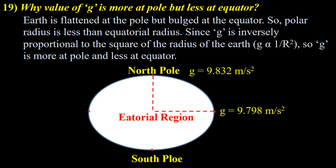We can understand with the help of a diagram. At the pole, the radius of the Earth is less, but in the equatorial region, radius of the Earth is more because Earth is flattened at the pole and bulged at the equator. Since acceleration due to gravity is inversely proportional to the square of the radius, and radius is less at the pole, g is more at the pole — that is 9.832 m/s². But at the equator, radius is more, so g is less — that is 9.798 m/s².